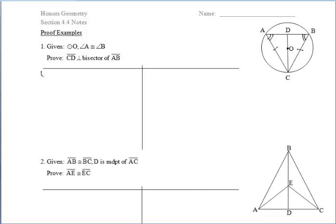So we have to find some points that are equidistant from the endpoints of that segment. Right away I'd be thinking about the fact that if we're given angle A is congruent to angle B, we can get those opposite sides AC and CB congruent, because if two angles of a triangle are congruent, then the sides opposite those angles are also congruent.